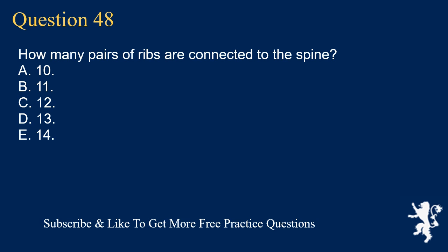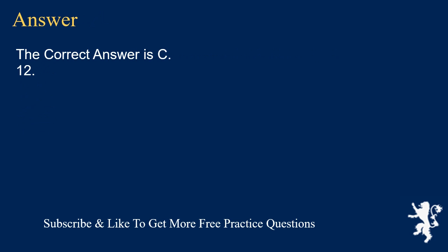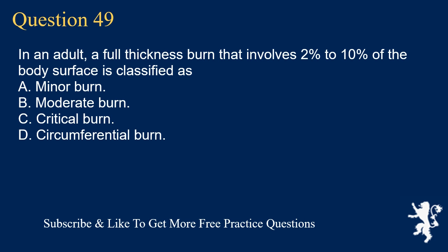Question 48. How many pairs of ribs are connected to the spine? A. 10. B. 11. C. 12. D. 13. E. 14. The correct answer is C. 12.